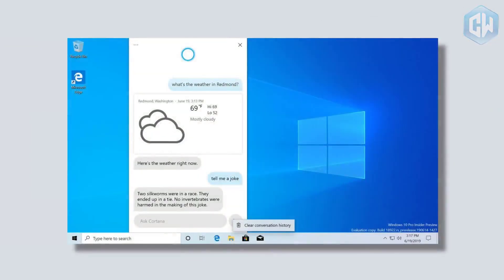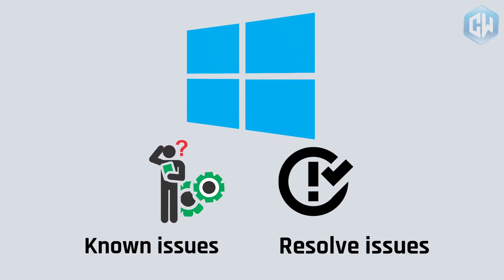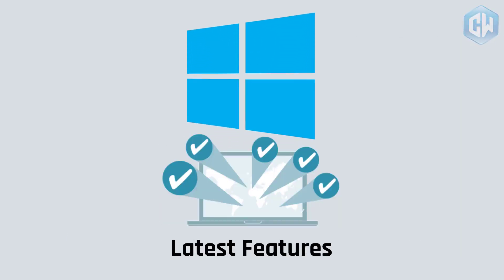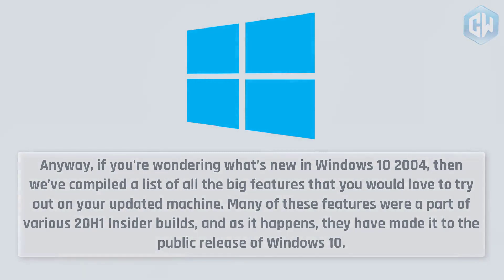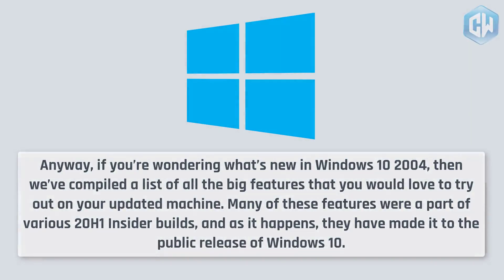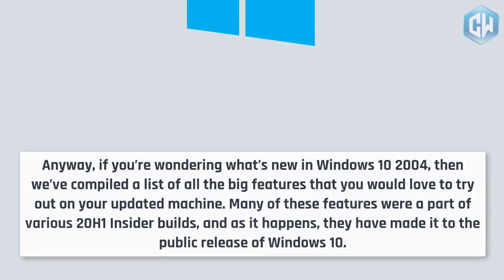After more than a year of development, Microsoft has started the official rollout of the Windows 10 May 2020 update, version 2004. The update will roll out after 28th March. Here are the known issues and resolved issues with Windows 10 version 2004, along with the latest features. Many of these features were part of various 20H1 insider builds and have now made it to the public release.